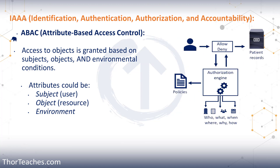Next, we have something newer: attribute-based access control, ABAC. It builds on top of role-based access control. We grant access based on the object, the subject, and environmental conditions. The subject is the user; the object is what needs to be accessed; and then there's something in the environment. For example, as a project manager, I inherently wouldn't have access to the data center. But if I'm assigned a project for the data center team in the data center, I have that attribute and I now have access. About 70% of large enterprises are expected to implement ABAC within the next 5 years, compared to roughly 25% today. You may also hear it called policy-based access control (PBAC) or claims-based access control (CBAC), but ABAC is the most common term.